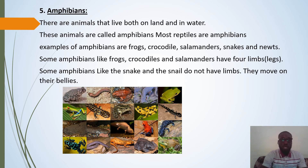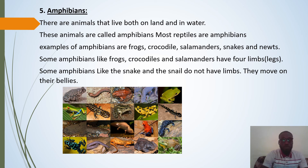The last category is amphibians. Amphibians are animals that live both on land and in water. Some examples of amphibians are frogs, crocodiles, salamanders, snakes, and newts. Some amphibians like frogs, crocodiles, and salamanders have four limbs or legs. Some amphibians like the snake do not have limbs and move on their bellies or crawl.